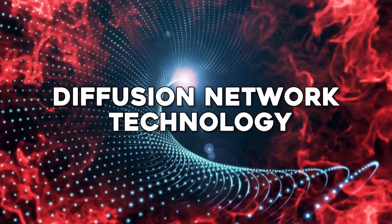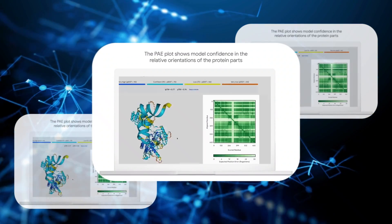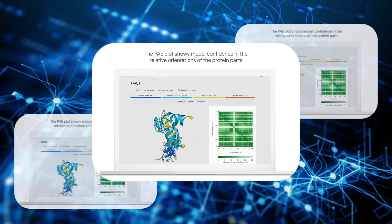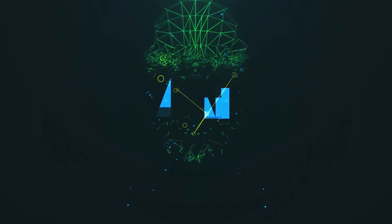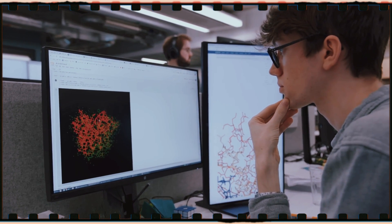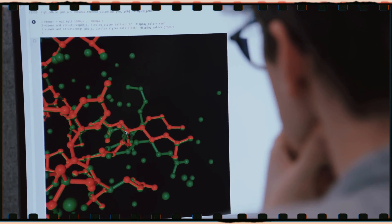Diffusion Network Technology. To achieve these detailed predictions, AlphaFold3 employs something called Diffusion Network Technology. This advanced AI technique starts with a rough guess of where atoms in a molecule might be, and then it refines that guess over many steps.